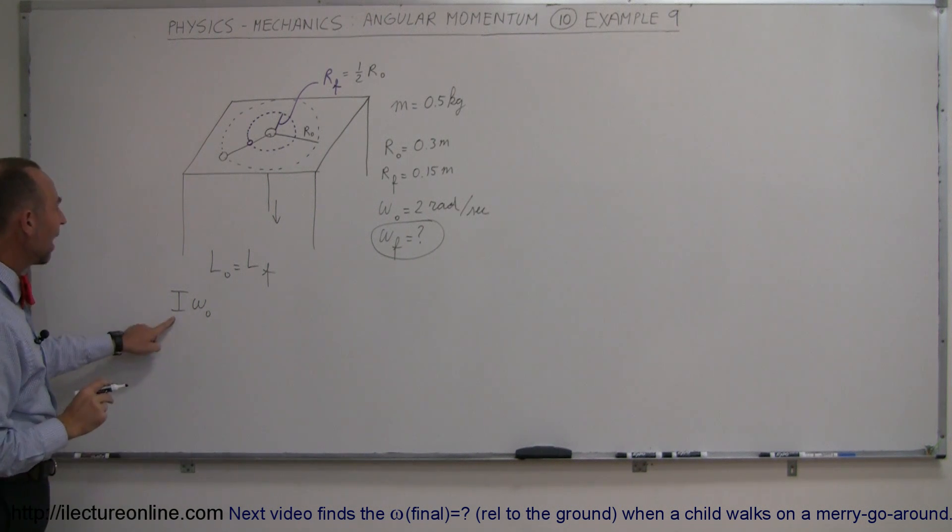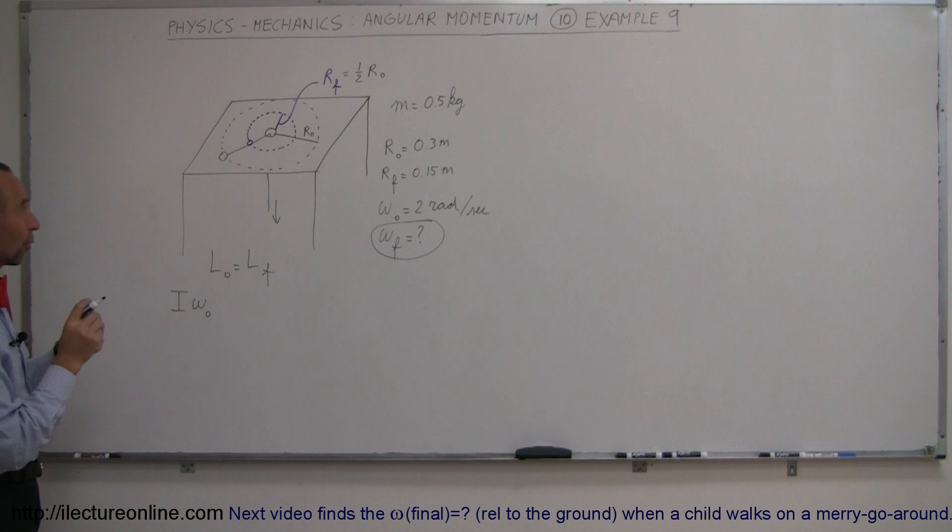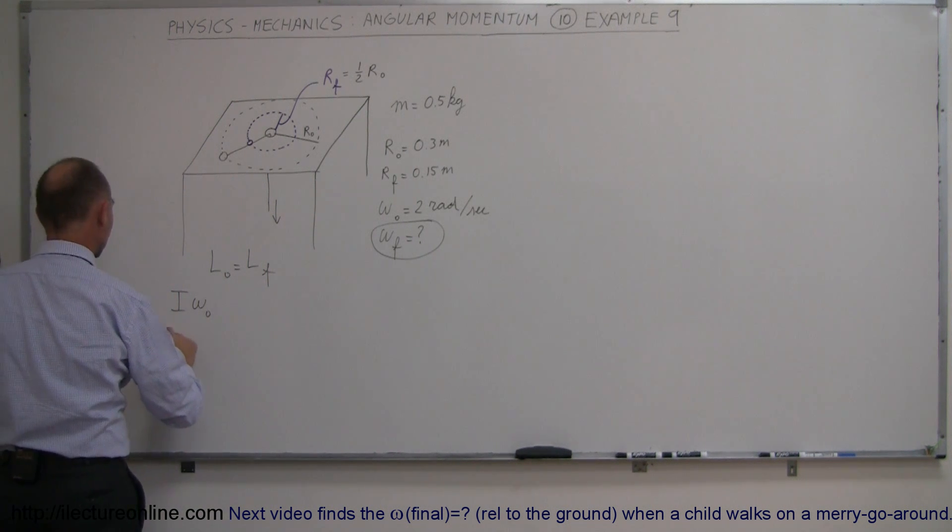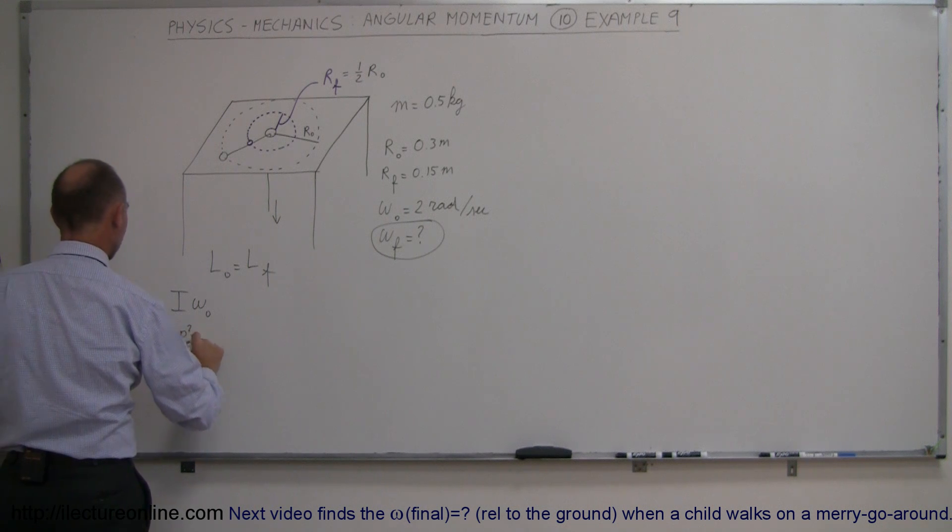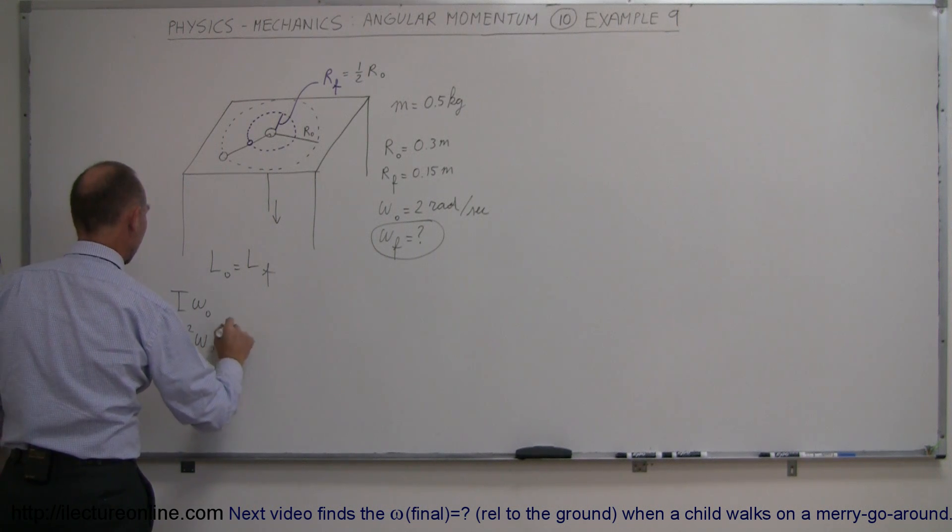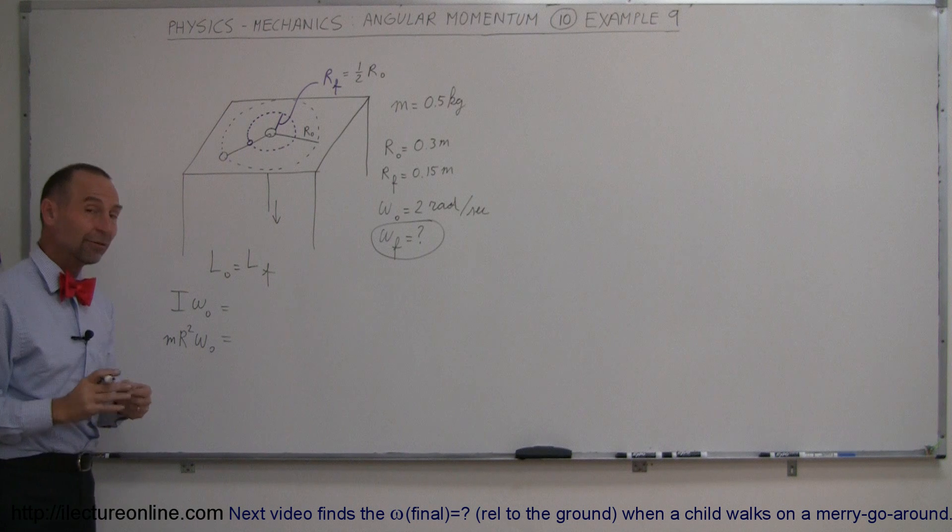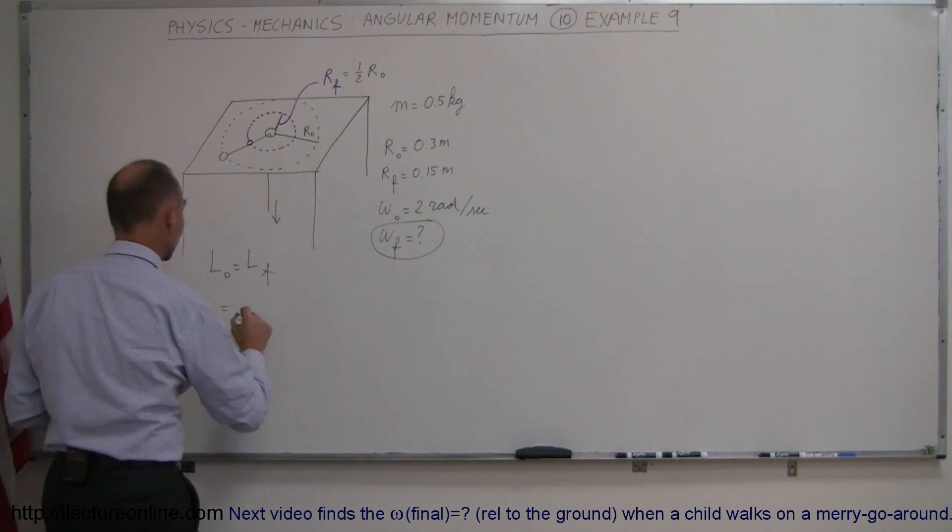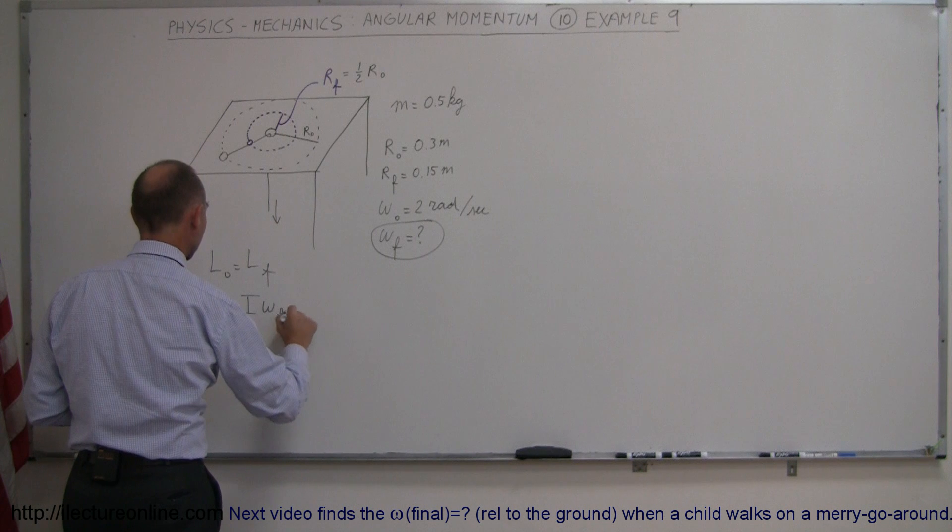So what is the I of the puck? Well, it's of course the point mass at a distance r away from the point of rotation so we can say that it's equal to m r squared times omega initial and what is that going to equal? Well, that's going to equal the final angular momentum which is going to be I times omega final.